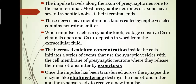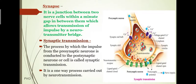At the synaptic knob, voltage-sensitive calcium ion channels open, calcium ions deposit inward from the extracellular fluid, and as calcium concentration increases, impulse in the pre-synaptic neuron causes release of the neurotransmitter by the process known as exocytosis.